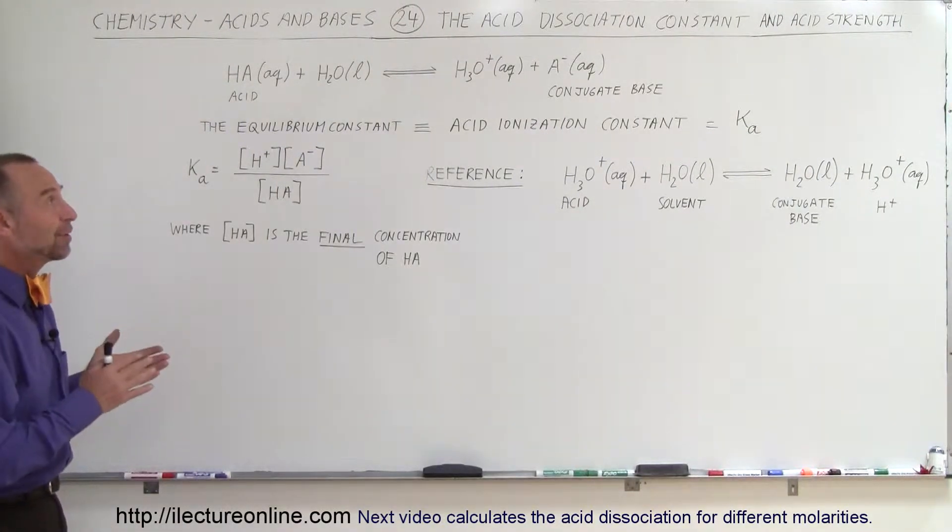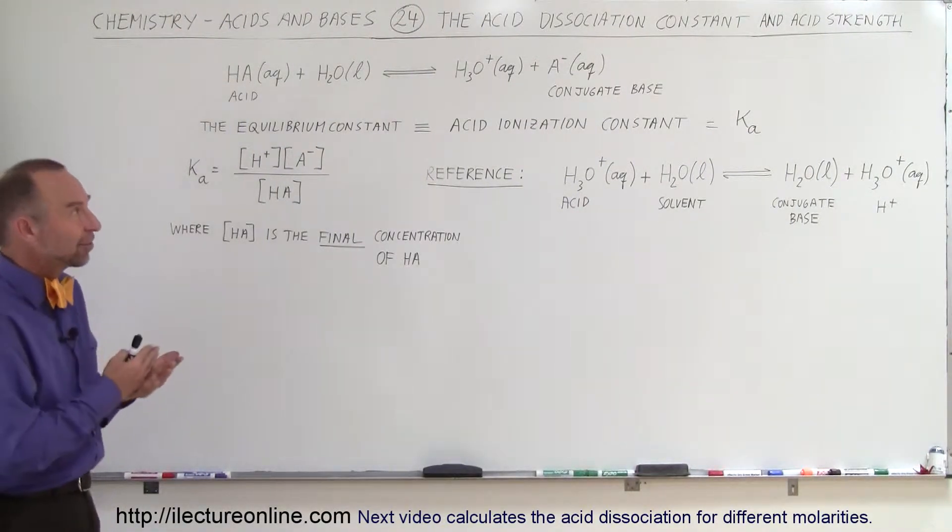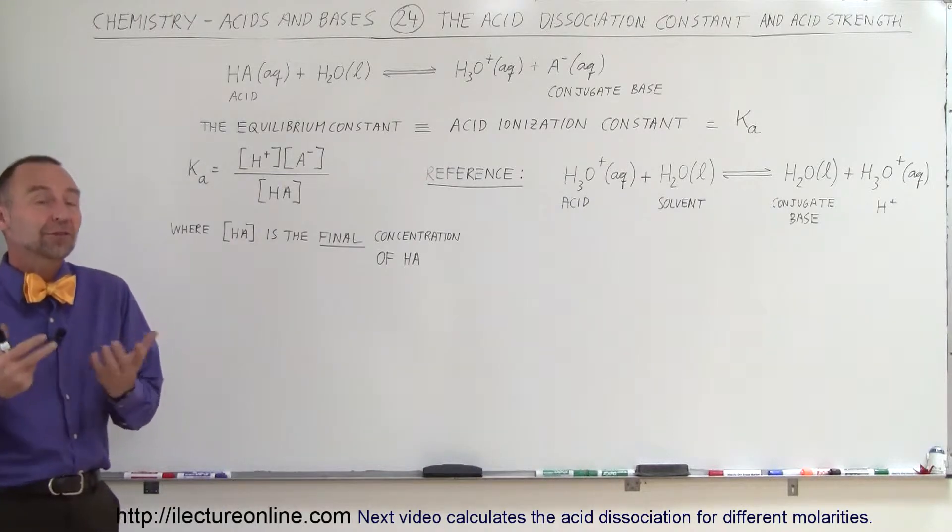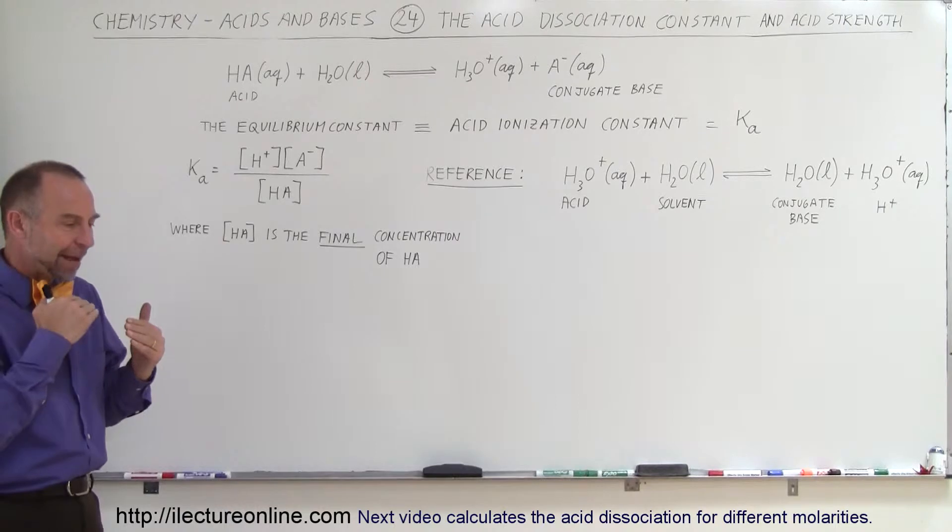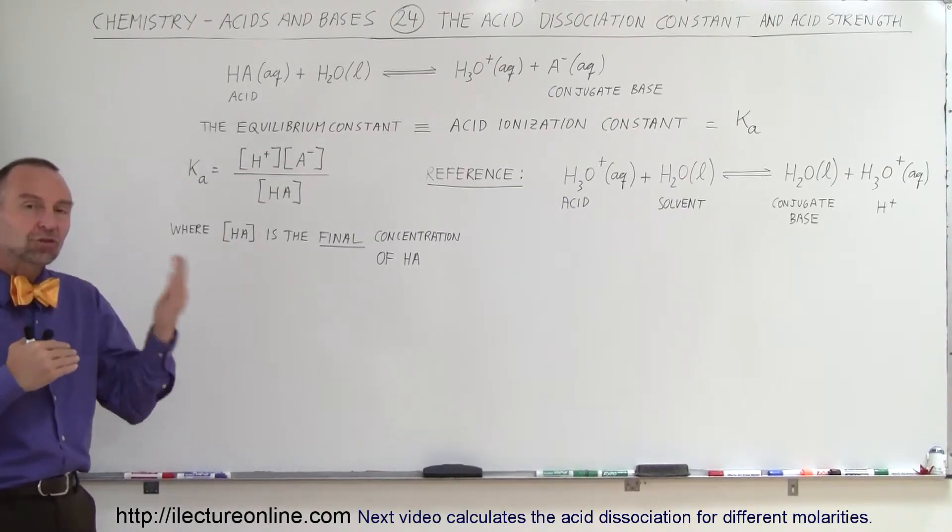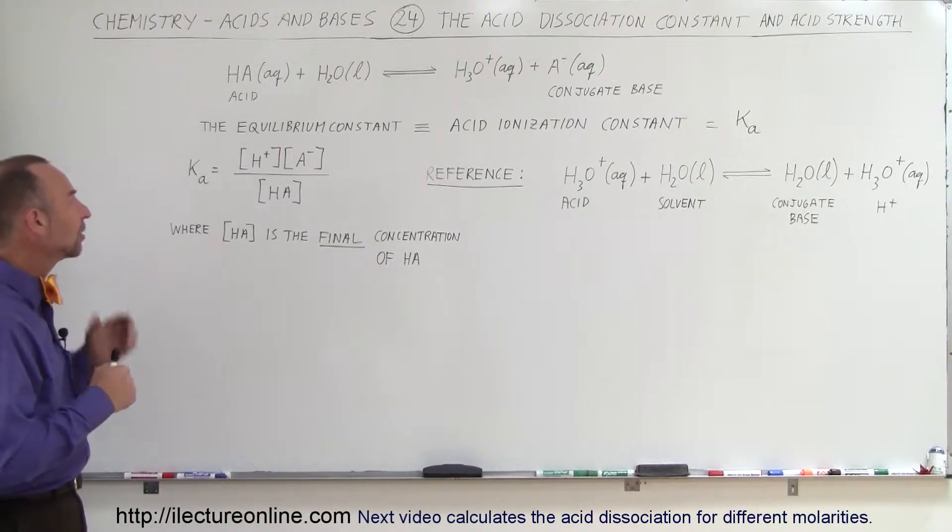Welcome to ElectronLine. In the previous video we saw a definition of the acid dissociation constant for acids, and so what we're going to do here is find the delineation between strong acids and weak acids using this constant.